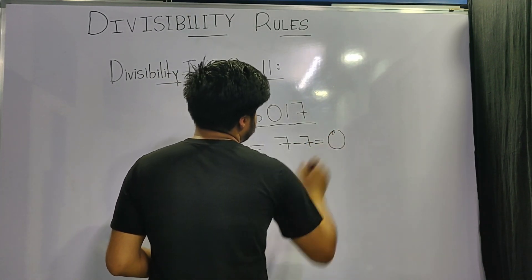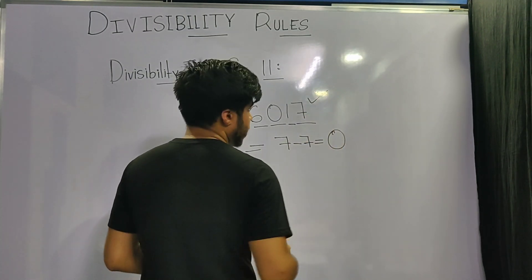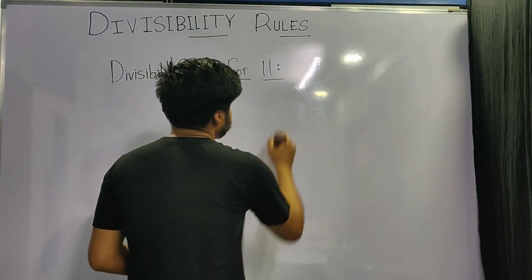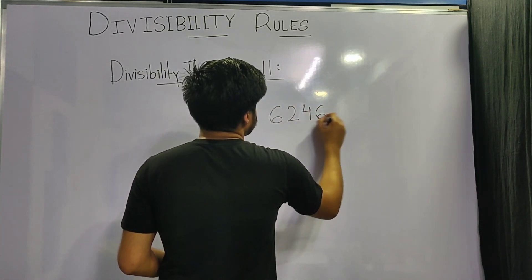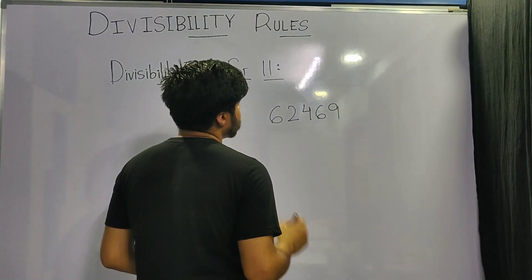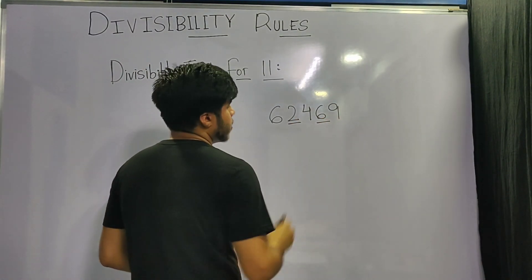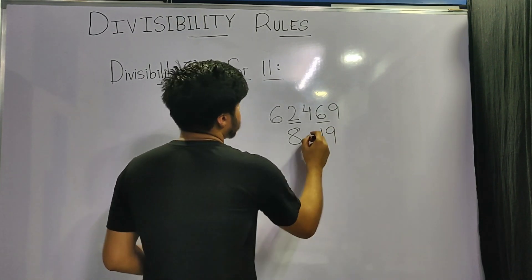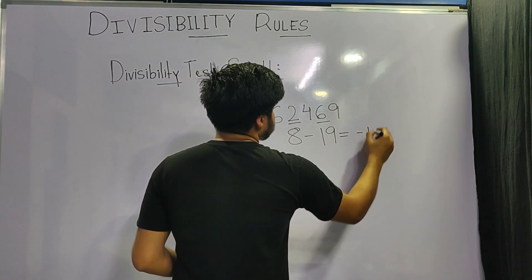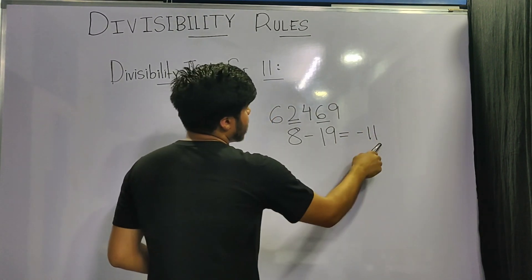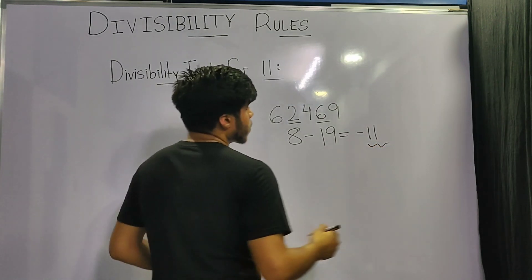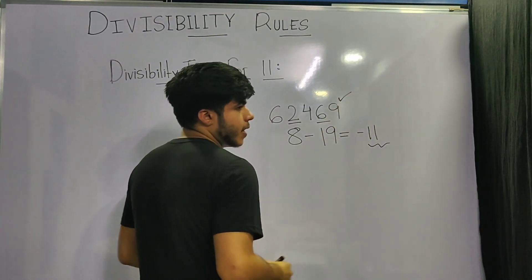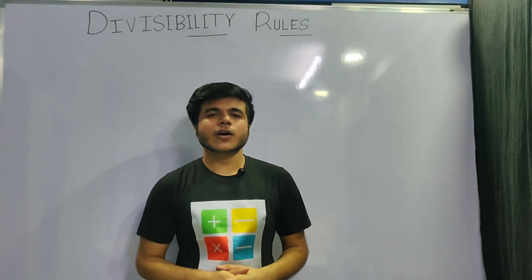Let's take another example: 62469. The sum of its digits at even places is 8, and the sum at odd places is 19. Subtracting gives −11. The sign does not matter; what matters is that the result is a multiple of 11, so the original number 62469 is indeed divisible by 11. That covers all the divisibility tests in this video — I hope you understood them all.